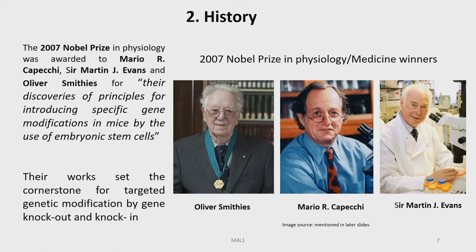Let us look into the development of the various concepts regarding targeted gene modification. In 2007, the Nobel Prize in Physiology was awarded to Mario Capecchi, Martin J. Evans, and Oliver Smithies for their discovery of principles for introducing specific gene modification in mice by the use of embryonic stem cells. They were recognized for work that set the cornerstone for targeted genetic modification by gene knockout and gene knockin.